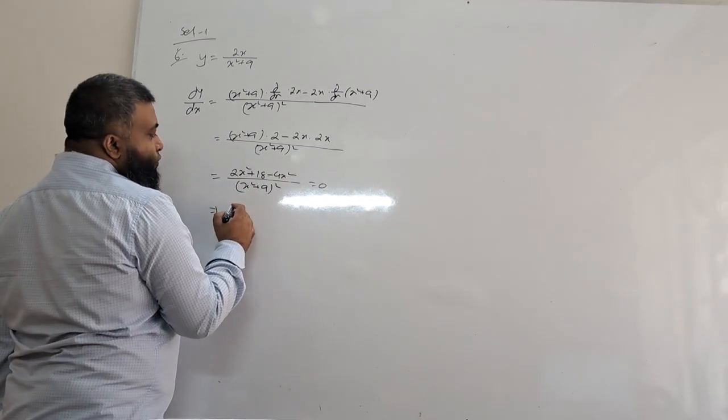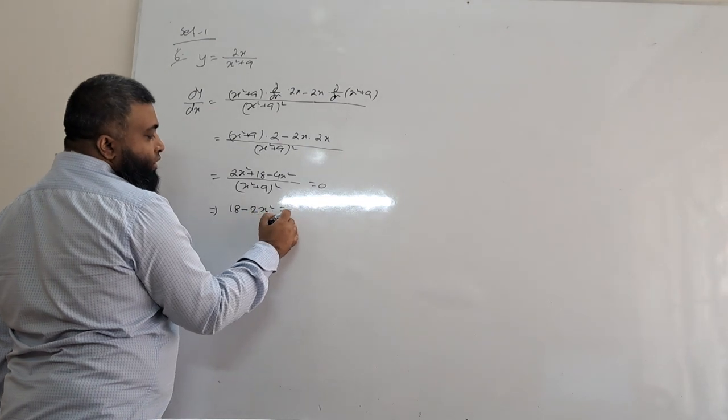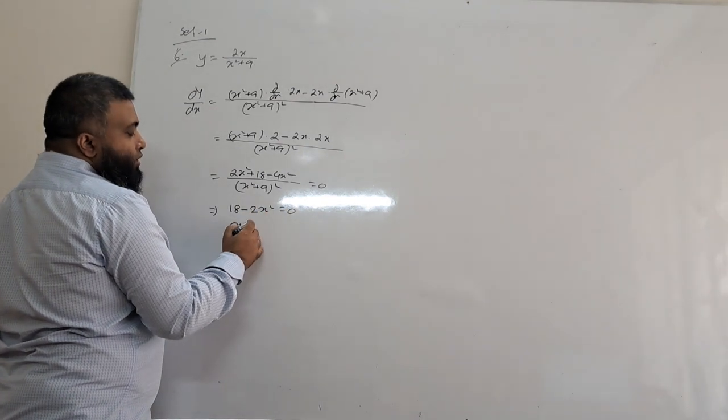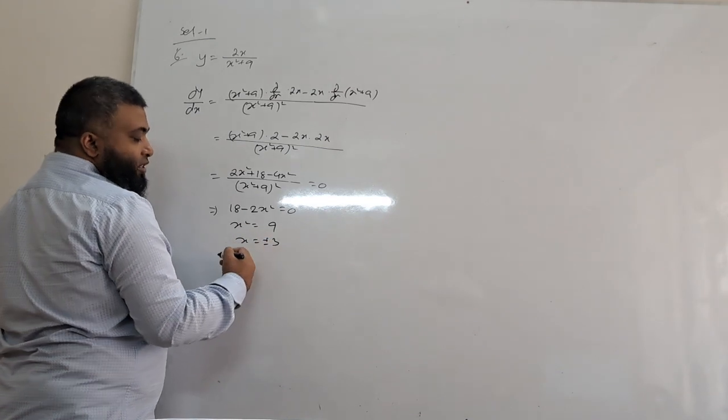Then 2x² minus 4x². So 18 minus 2x² equals 0. You can take x² equals 18/2 = 9. So x equals plus or minus 3.